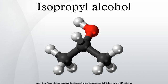Like most alcohols, isopropyl alcohol reacts with active metals such as potassium to form alkoxides that can be called isopropoxides. The reaction with aluminium is used to prepare the catalyst aluminium isopropoxide. Production: in 1994, 1.5 million tons of isopropyl alcohol were produced in the United States, Europe, and Japan.